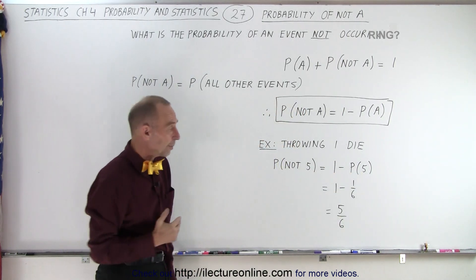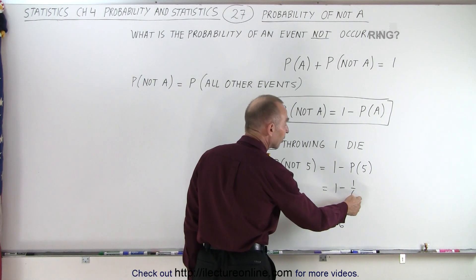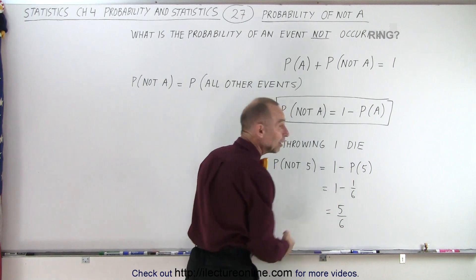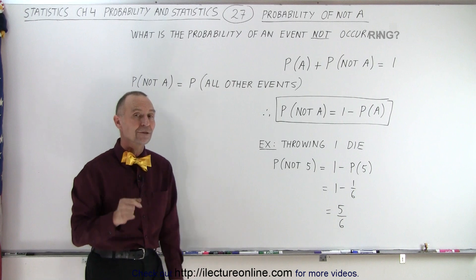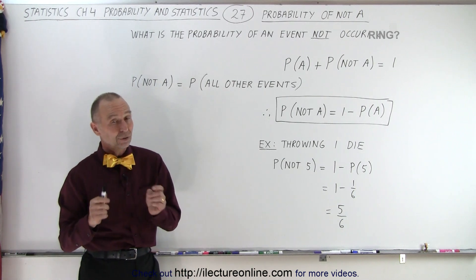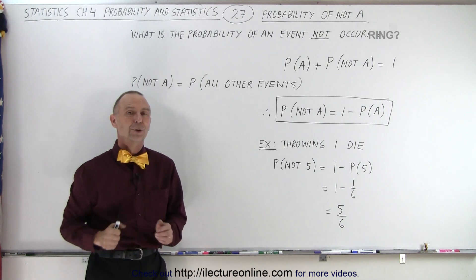Since there's 1 sixth probability that we'll throw a 5, we then take 1 minus 1 sixth, and we then get the probability of all other events, which means that's the same as the probability of not throwing a 5. And that's what we mean by the probability of an event not occurring.